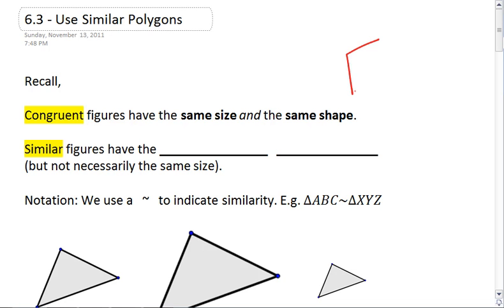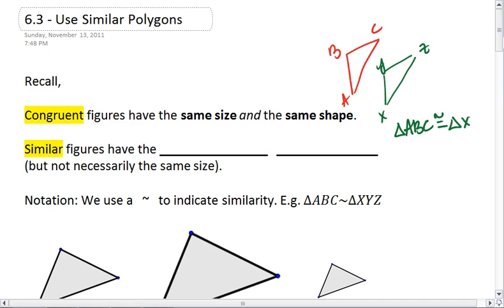For example, here we see that triangle ABC is roughly congruent to triangle XYZ. And we use this for our congruency statement, that triangle ABC is congruent to triangle XYZ, making sure that we match up corresponding angles.